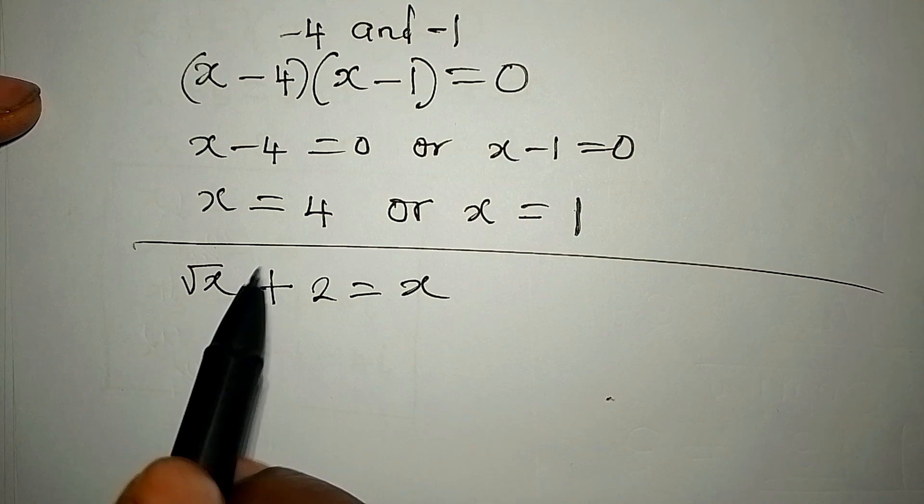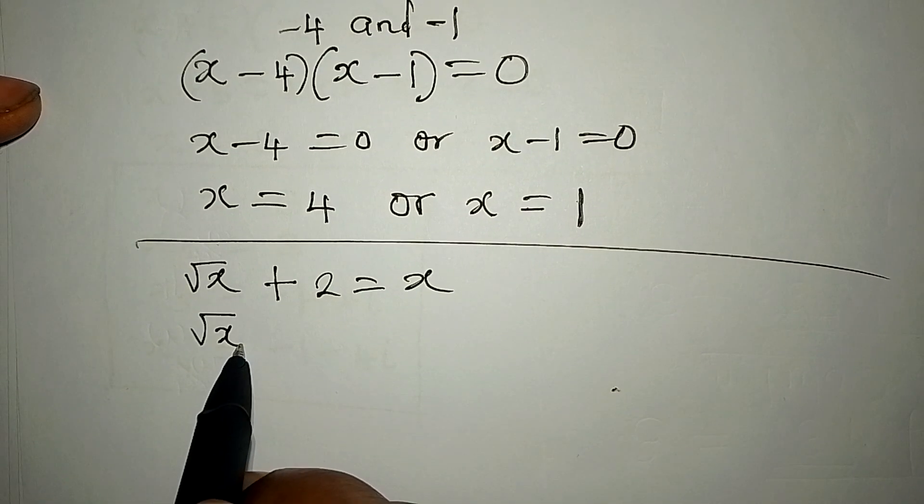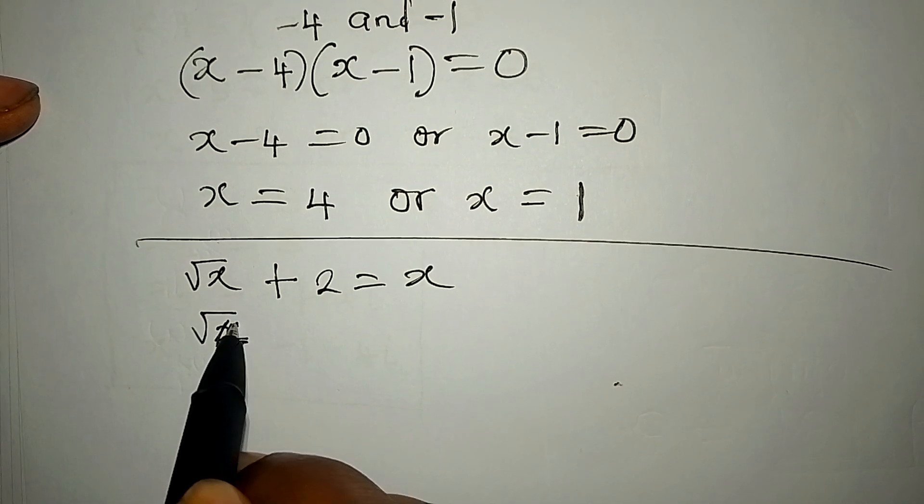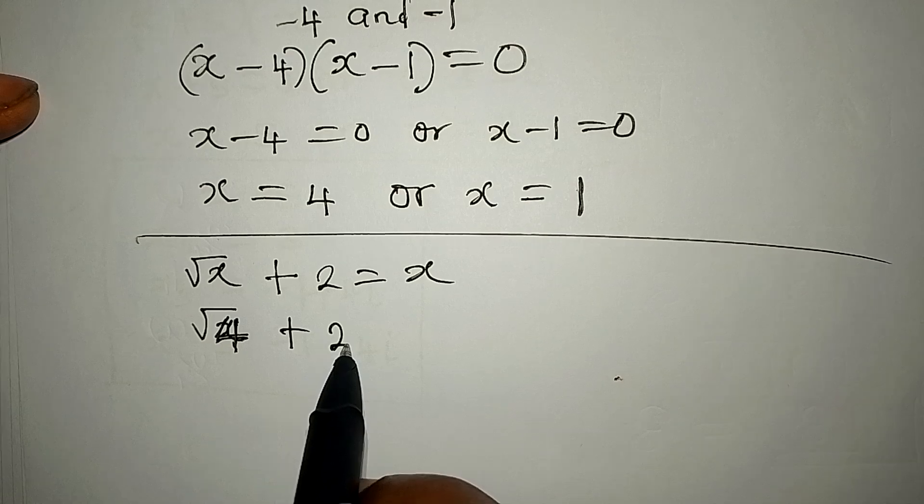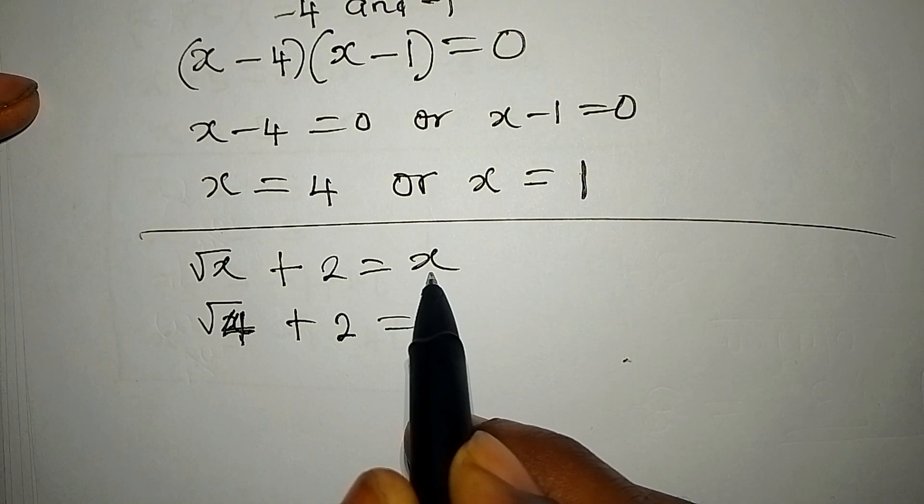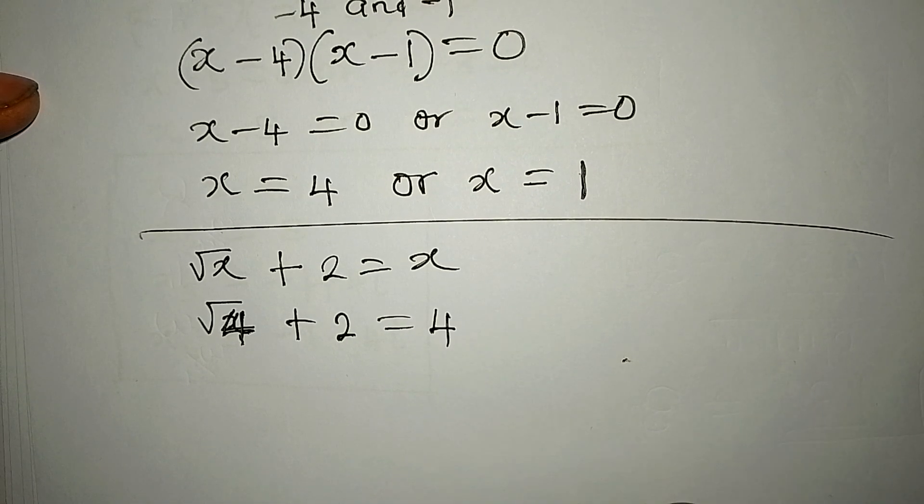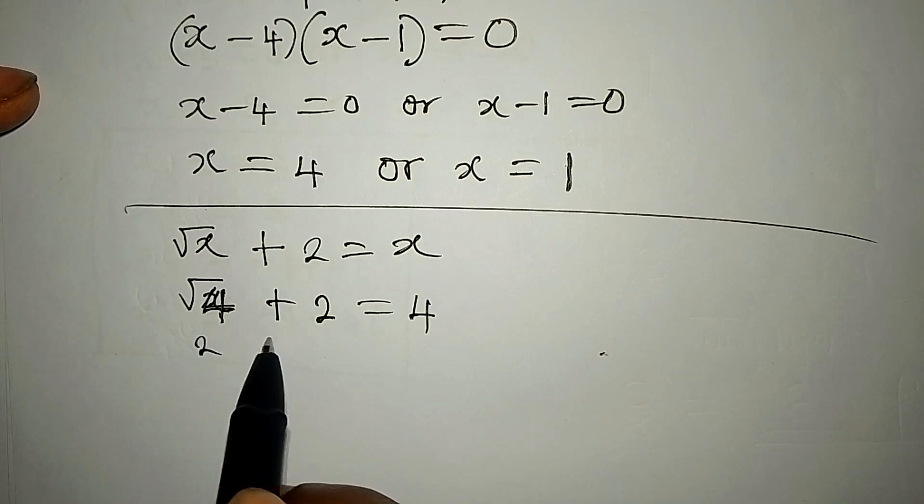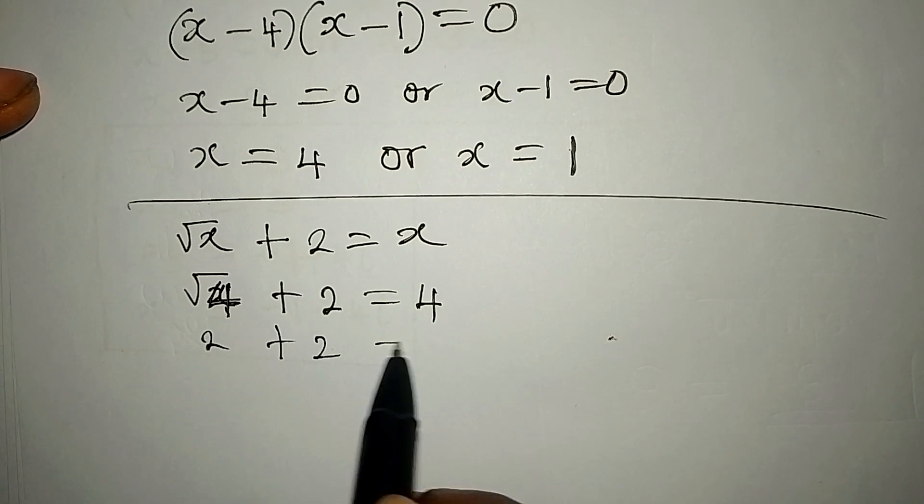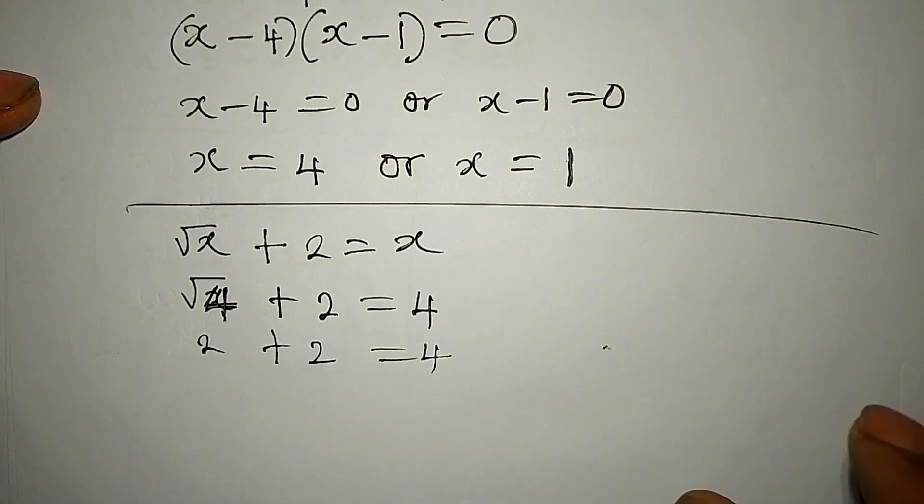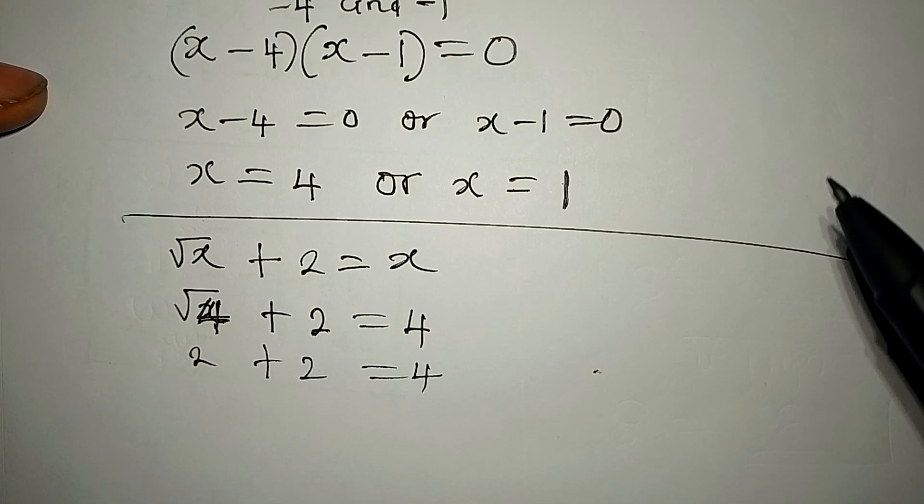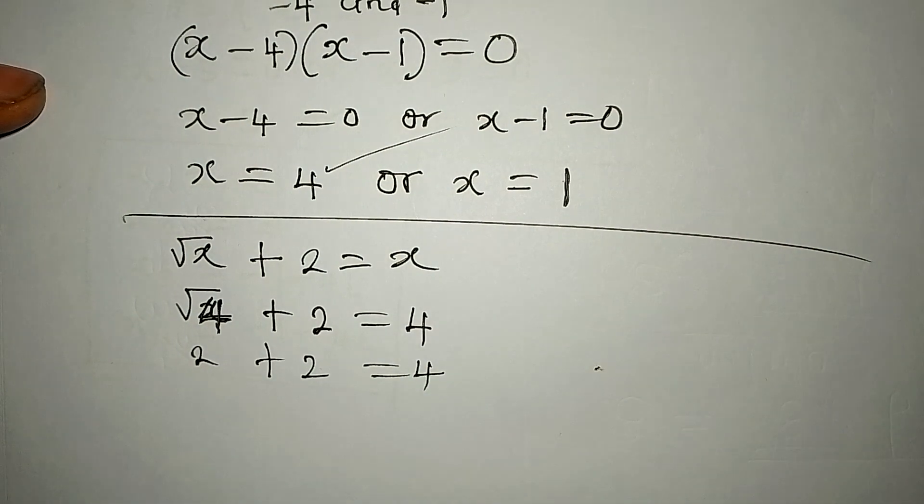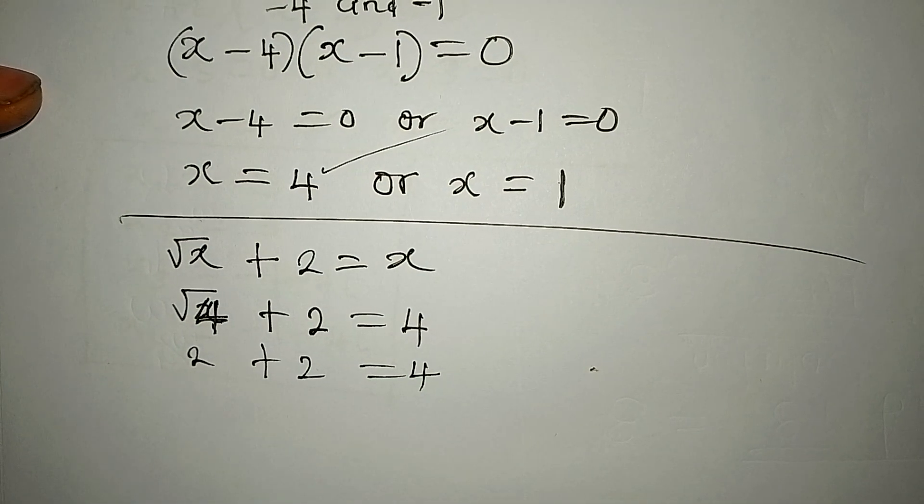If I put 4 as x, then I have root x, which is root 4, right? Then plus 2 equal to 4. Now square root of 4 is 2 plus 2, and that is giving us 4 on the right hand side. This is to confirm that x equals 4 satisfies the equation.